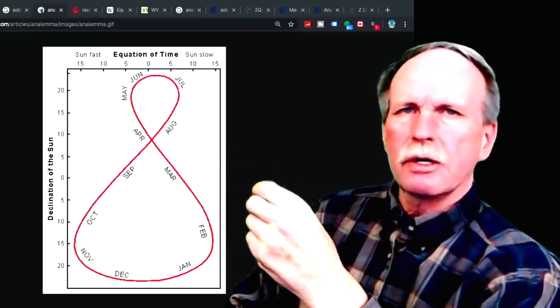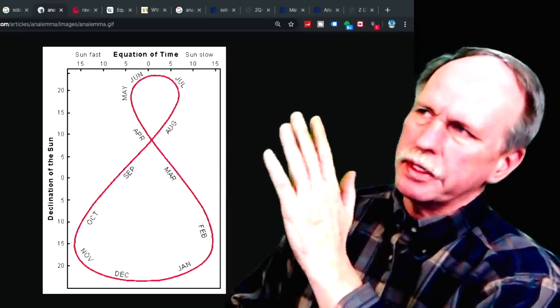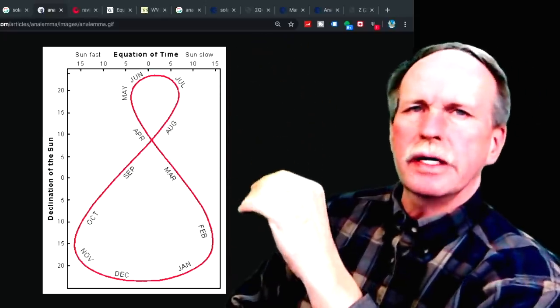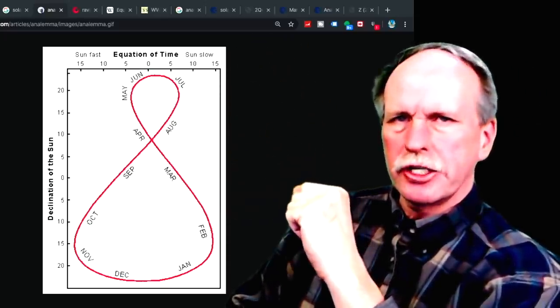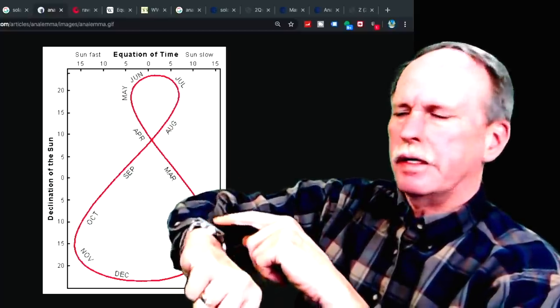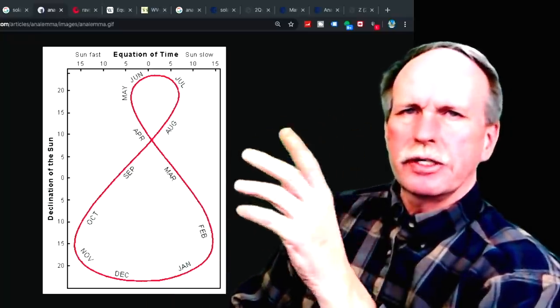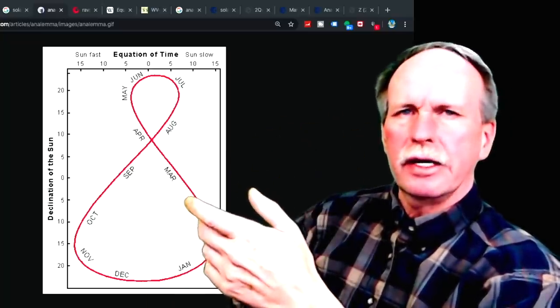Now this is a very important concept, the difference between local solar time and mean solar time. Now local solar time is also called sundial time, and local solar noon will be when the sun is at its highest point in the sky from your location. Mean solar time is also called watch time. That's when your clock says 12 noon.